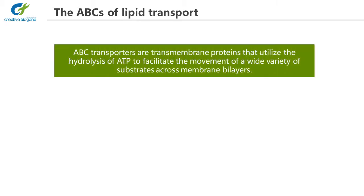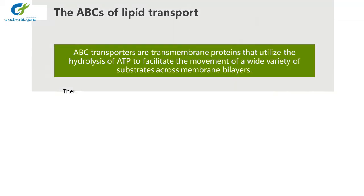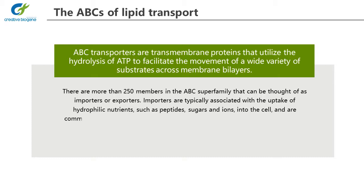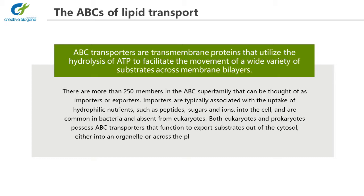The ABCs of lipid transport. ABC transporters are transmembrane proteins that utilize the hydrolysis of ATP to facilitate the movement of a wide variety of substrates across membrane bilayers. There are more than 250 members in the ABC superfamily that can be thought of as importers or exporters. Importers are typically associated with the uptake of hydrophilic nutrients, such as peptides, sugars and ions, into the cell, and are common in bacteria and absent from eukaryotes. Both eukaryotes and prokaryotes possess ABC transporters that function to export substrates out of the cytosol, either into an organelle or across the plasma membrane and out of the cell.